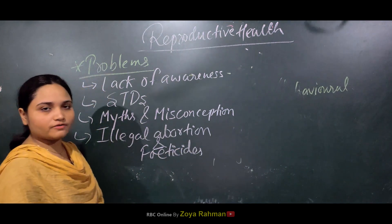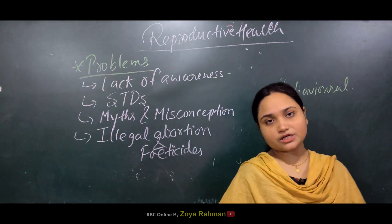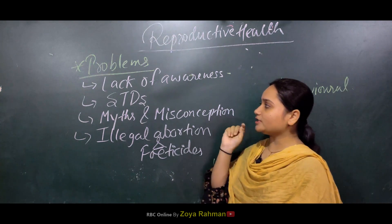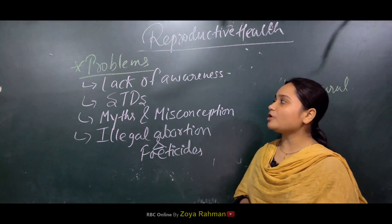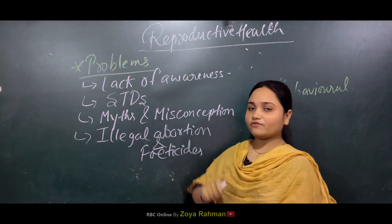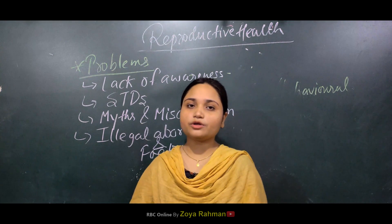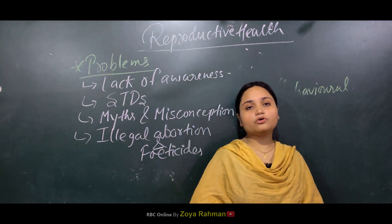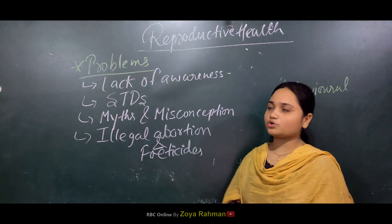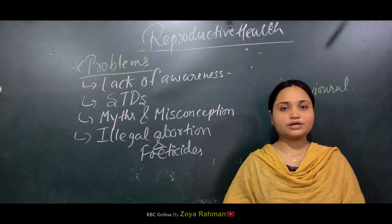Illegal abortions were being carried out and female feticide ratio had increased significantly. These are the common problems related to reproductive health, and the most important reason among all of them is lack of awareness - people had not been made aware of reproductive health, which led to damage of reproductive health.